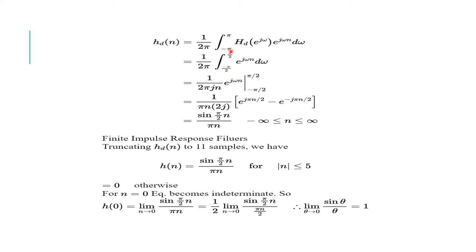It is 1 for -π/2 to π/2. Making it finite, times e^(jωn) dω. Then integrate and substitute the limits — we get sin(πn/2) / (πn), which exists for infinite limits, that is -∞ to ∞. Now the value of capital N given is 11 samples. So we have to truncate HD(n) from infinite to finite — finite being 11 samples. H(n) equals HD(n) as per symmetry: H(n) = sin(πn/2) / (πn) for |n| ≤ (N-1)/2. Our N is 11, so (11-1)/2 = 5.